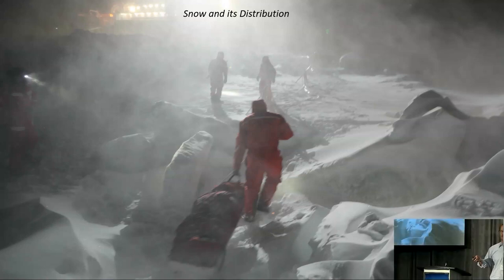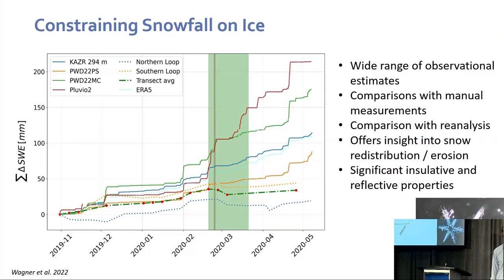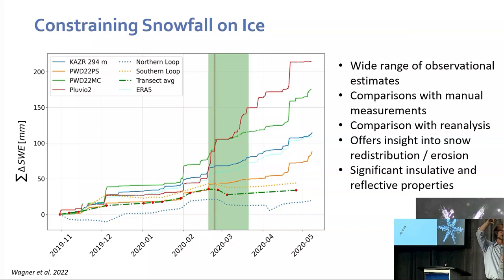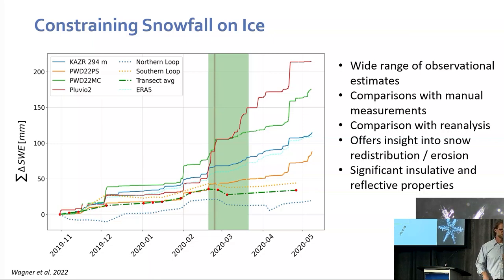Snow and its distribution is a big topic we're starting to appreciate more as a community. We measured snowfall out there — very challenging in windy conditions. But we're making important strides to understand snow as a moisture sink from the atmosphere and a source on the surface, how it's distributed spatially, how that affects thermal conductive properties of the ice and snow, how it affects albedo evolution over the course of seasons, and how much of that snow is lost into leads. A very cross-cutting theme important for both observations and models.